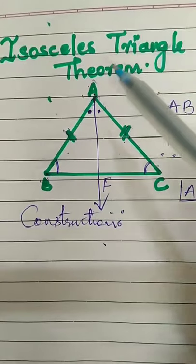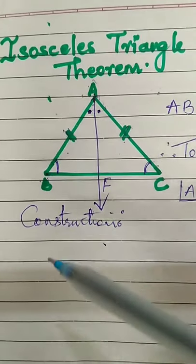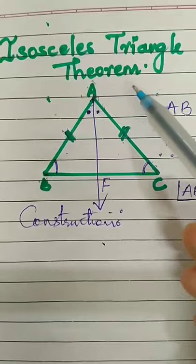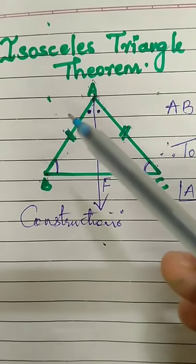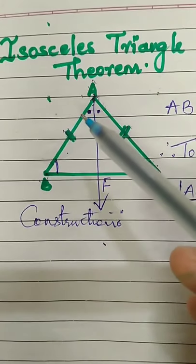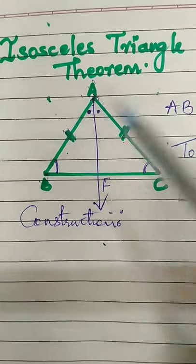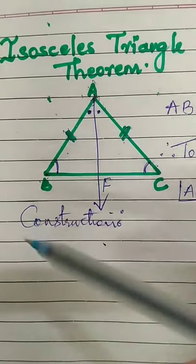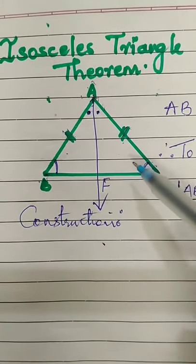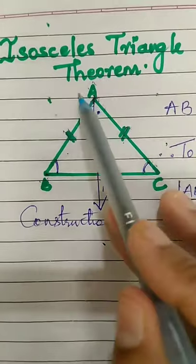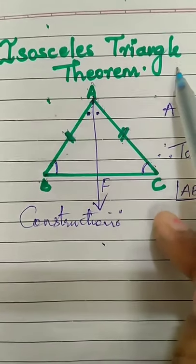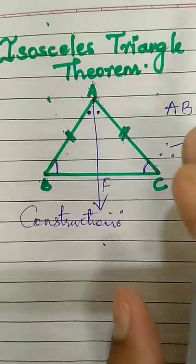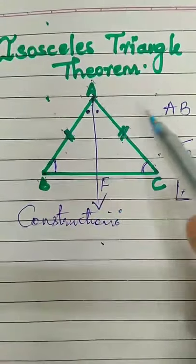Now, remember, you need not learn the theorem by heart, but you should know the property. According to the reduced pattern, this theorem will not come for your exam, but you should know the property. The property is there for solving the sums, and the same thing will be there for your 10th standard also. So you should learn what is isosceles triangle theorem.